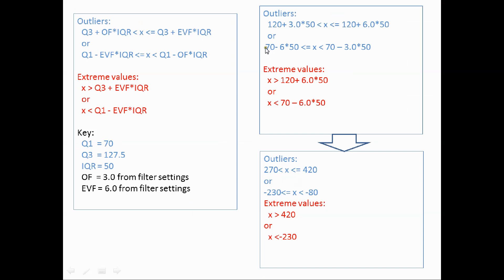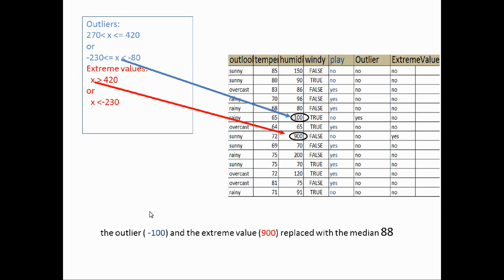The result of the calculations: the outlier is greater than 270 and less than or equal to 420, or greater than or equal to minus 230 and less than minus 80. The extreme values X is greater than 420 or less than minus 230. Returning to the dataset: minus 100 is between minus 230 and minus 80 — this is the outlier — and 900 is greater than 420, making it an extreme value.